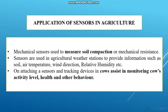The most important application is using sensors in livestock management. Attaching sensors and tracking devices to cows helps in monitoring the cow's activity level, health, and other behavior. We can monitor the cow's health and activity with the help of sensors and tracking devices. These are the major six applications of sensors in agriculture.